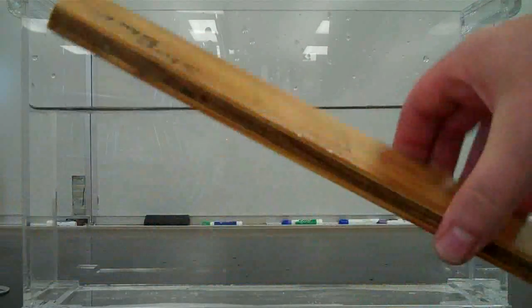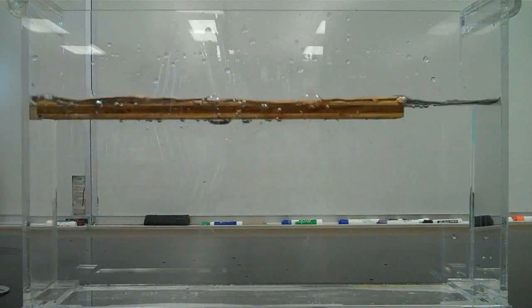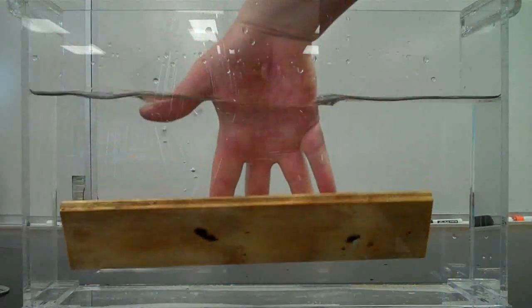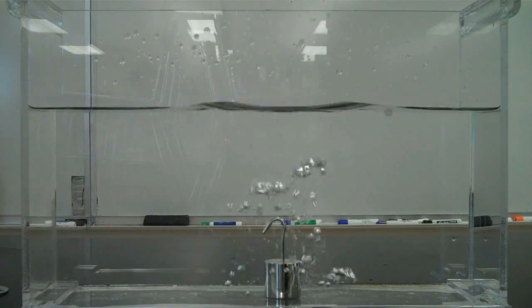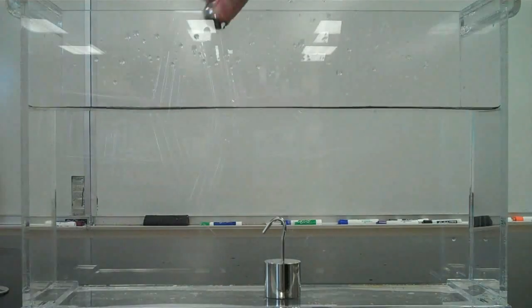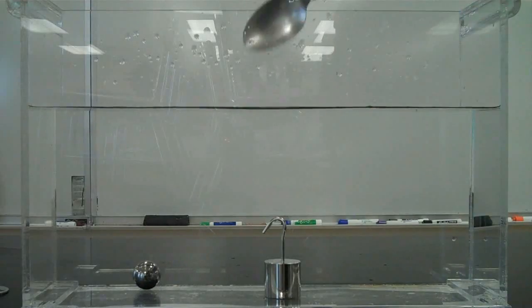Most wood floats on water because wood has a lower density or mass to volume ratio than the water that surrounds it. But metals sink because they have a higher density than the water around them.